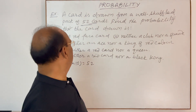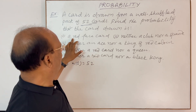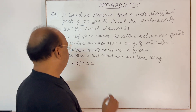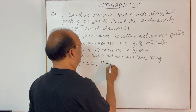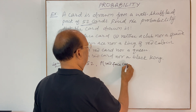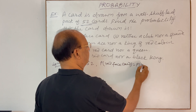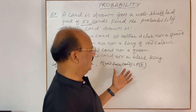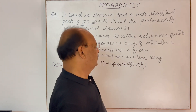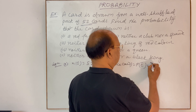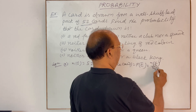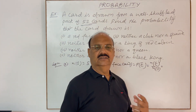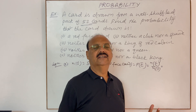For the first question, we have to find out the probability of a red face card. We have to find out the probability of a measurable event. The formula will be: probability = n(E) divided by n(S).